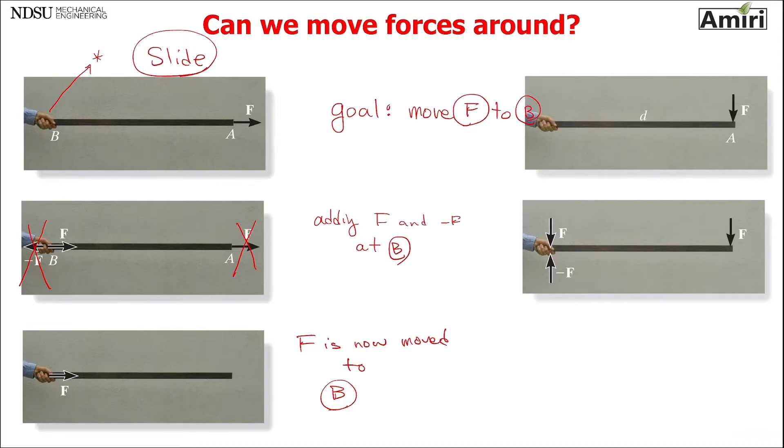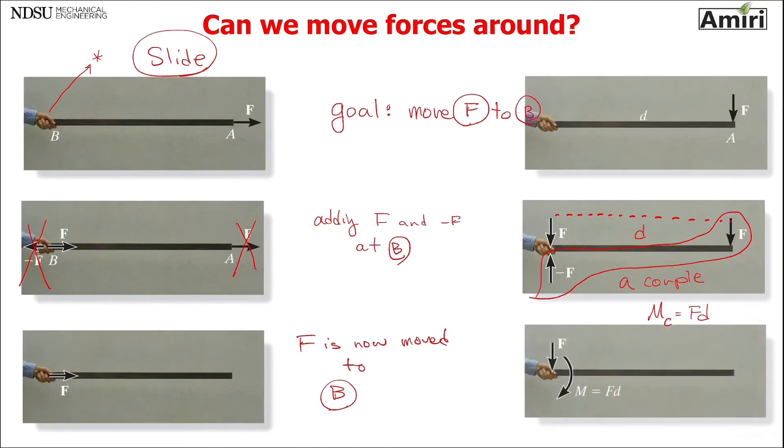But we just learned in previous lecture something about two parallel forces, same magnitude, opposite direction, at a distance D. We just learned that. What do we call that? A couple. And also, we learned that you can replace a couple by its vector. So magnitude of the couple is going to be FD. So I'm going to get rid of it, replace it by a vector. Goal achieved. So F is now moved at B, but in this case we have created a moment at B because we moved F.